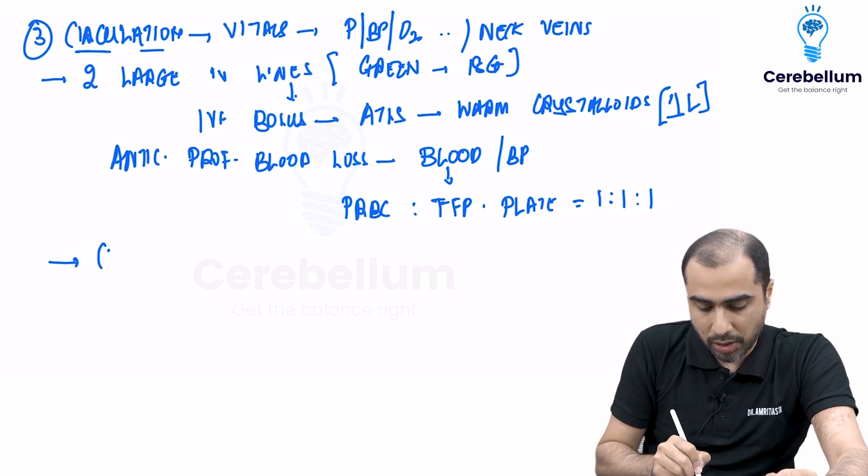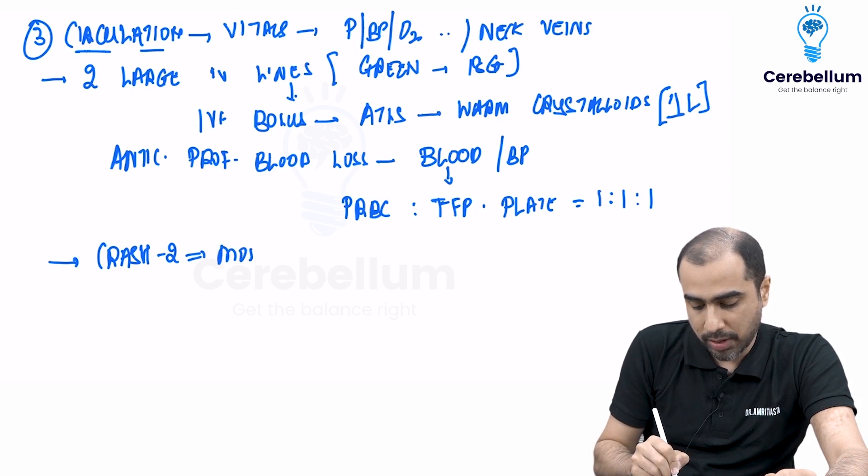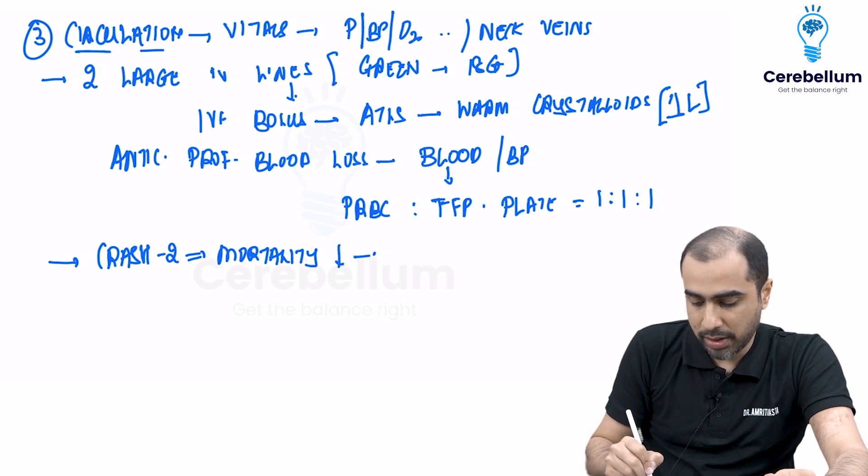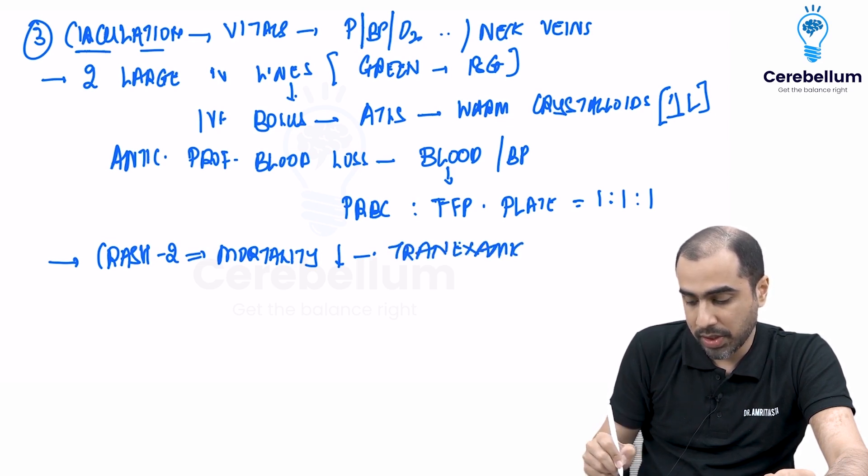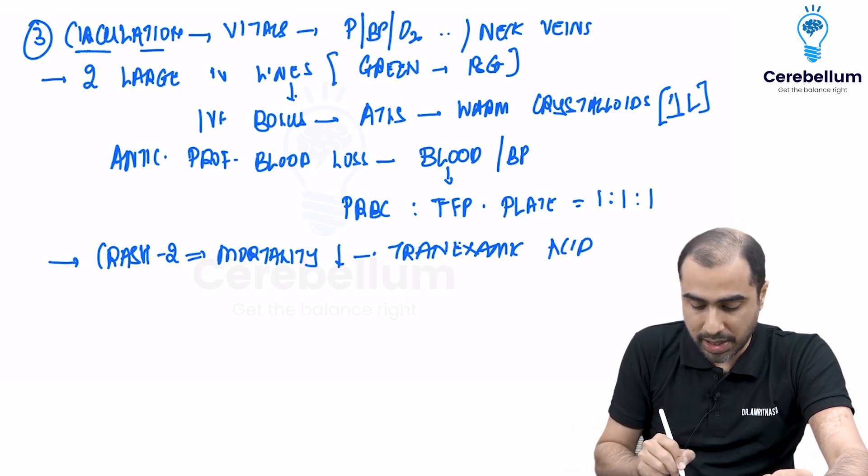So that is circulation. And there is something new which has come. They did a trial called CRASH 2 trial where they found that the mortality will reduce. There is a reduction in mortality by giving tranexamic acid. This is something new, you can expect a question on this.